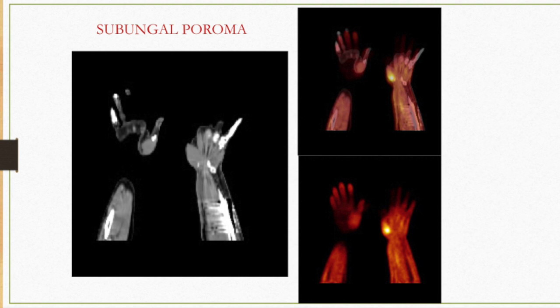This is a very unusual case of subungual poroma, where there is a focal area of uptake involving the thenar muscles of the left hand. It is a non-malignant condition but was picked up incidentally, and histopathology confirmed it to be a subungual poroma.